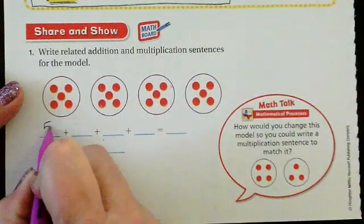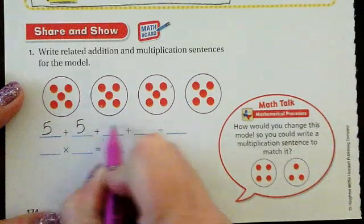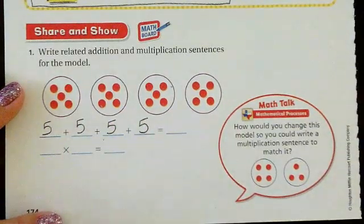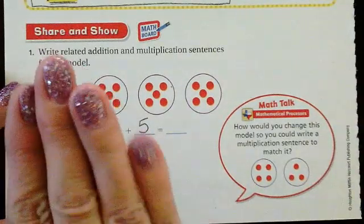So it would be five plus five plus five plus five. And I can count that. Five, ten, fifteen, twenty.